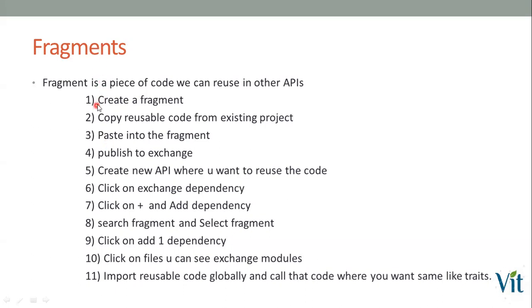These are the steps we need to follow. First, create a fragment. Then copy the reusable code from an existing project and paste it into the fragment. Then publish it into Exchange. Next, create a new API where you want to reuse the code. Click on Exchange dependency, add the dependency into your new project, then import the reusable code globally and call the code using the 'is' keyword — the same way we call traits.